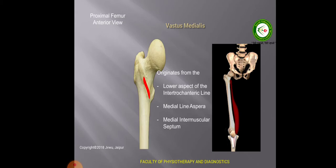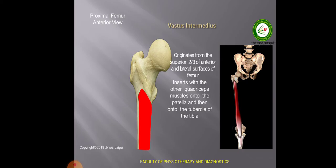The vastus medialis is a muscle of the front of the thigh on the medial aspect. It arises from the lower aspect of the intertrochanteric line and from the medial lip of the linea aspera, and from the medial intermuscular septum. The vastus intermedius is also a muscle of the front of the thigh, and it arises from the upper two-thirds of the anterior surface of the femur. So on the major portion of the anterior surface of the femur we have the origin of vastus intermedius.